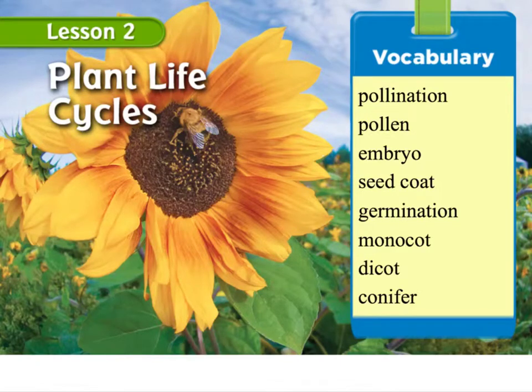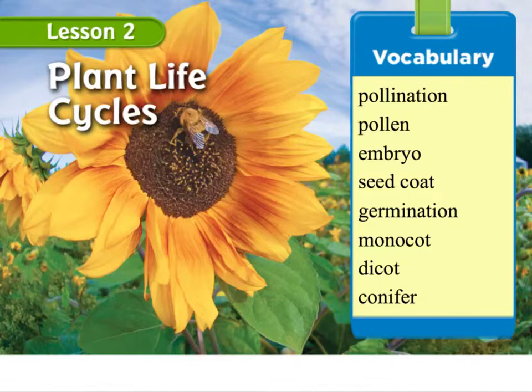The following lesson is for fifth grade. This is Chapter 2, Lesson 2 on plant life cycles. In this lesson, we'll discuss the following vocabulary: pollination, pollen, embryo, seed coat, germination, monocot, dicot, and conifer.